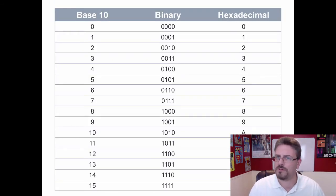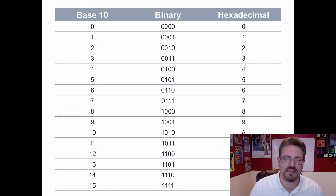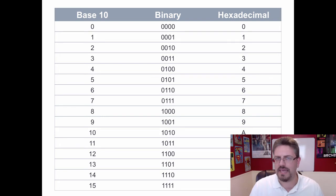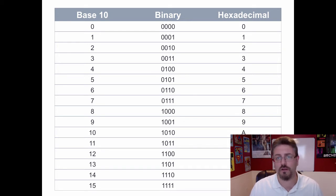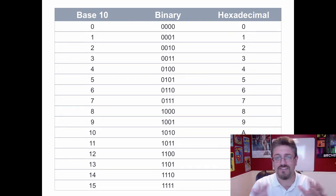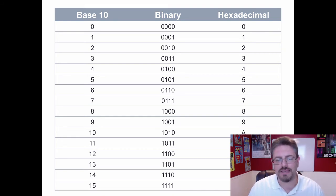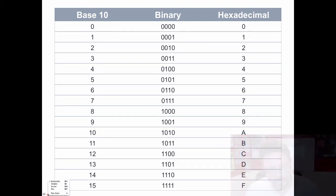In pretty much every intro class and BCIS class, you have to learn about base 10 to binary — and maybe something called hexadecimal. Base 10 is something we're all familiar with; we all learned about it from kindergarten all through school. It's a numbering system based on 10. Why? Because you had 10 fingers and 10 toes — that's how people learned how to count. Binary is a little different, but it isn't exactly hard. Take a look at the graphic here.